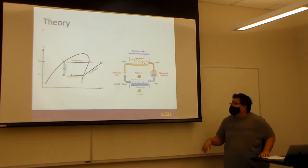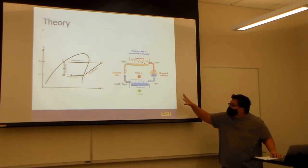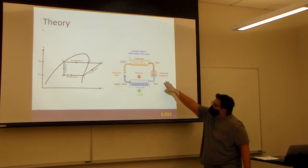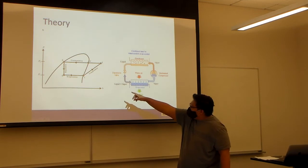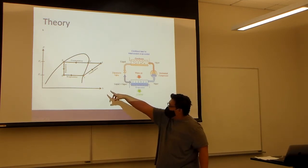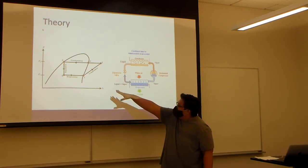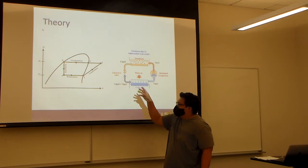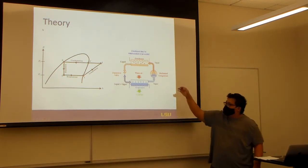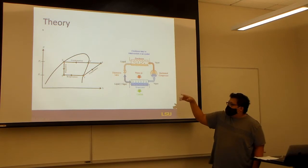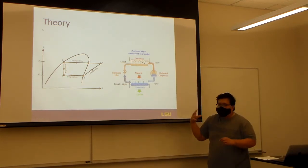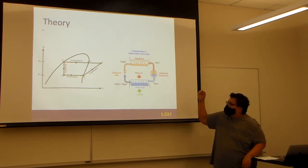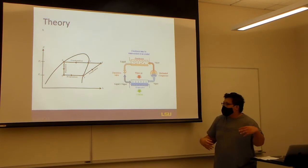Here we have the refrigeration cycle. It starts off putting in work into the mechanical compressor, and then from stage one at the bottom right, it'll go from one to two in compression. That means that the pressure and enthalpy will go up. Then it'll go into the condenser from two to three, and it'll saturate the liquid, and then expand and evaporate the liquid.